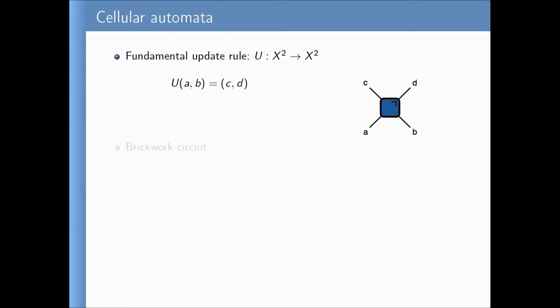I will draw pictures instead of too many formulas. We start with the so-called fundamental update rule, which acts on a collection of two cells only. It is a function that takes two variables — a pair a and b — and gives you a new pair c and d. In my pictures, horizontal direction stands for space and vertical direction is time, with time flowing upwards. A box represents the function u taking two incoming variables and giving two outgoing variables.